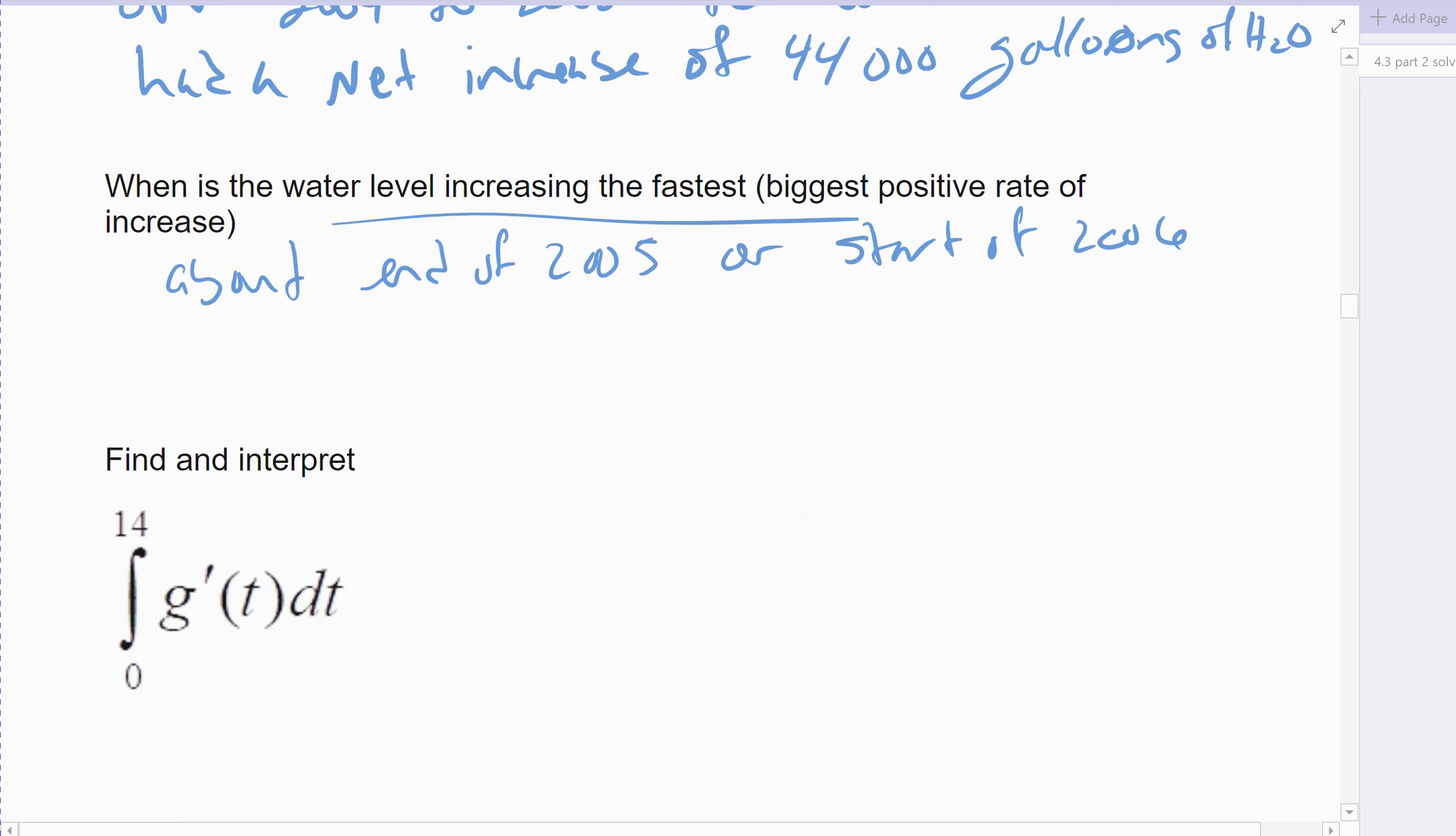So I'm going to say about either at the end of 2005 or the start of 2006. Again, however you see where that peak is. Alright, the last one, find the definite integral from 0 to 14 of my derivative function. And so this would be my net change over all 14 years.